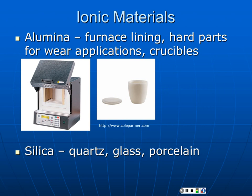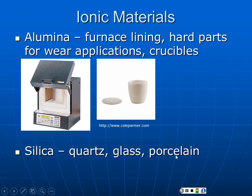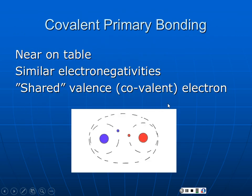Important ionic materials include alumina (aluminum oxide), which is tremendously important — used in furnace linings and hard abrasive parts. When you polish bolts in lab, you'll use aluminum oxide as your abrasive. Crucibles used for burning out composites are also ionic materials. Silica — the basic constituent of sand, quartz, glass, and porcelain — is also an ionic material.